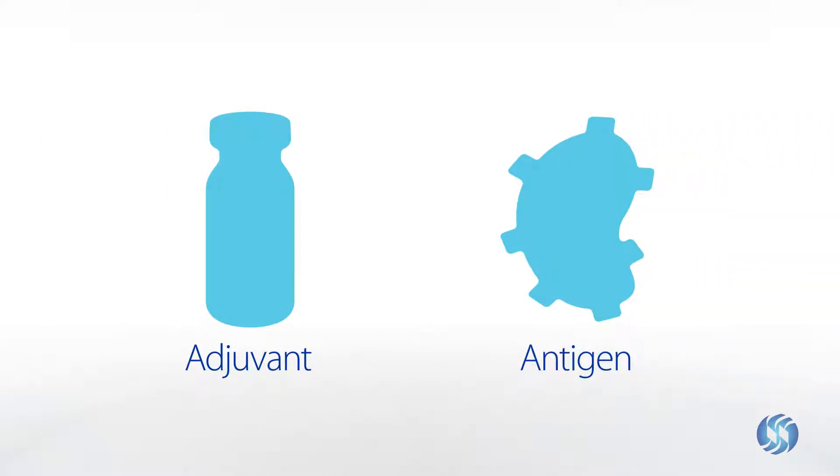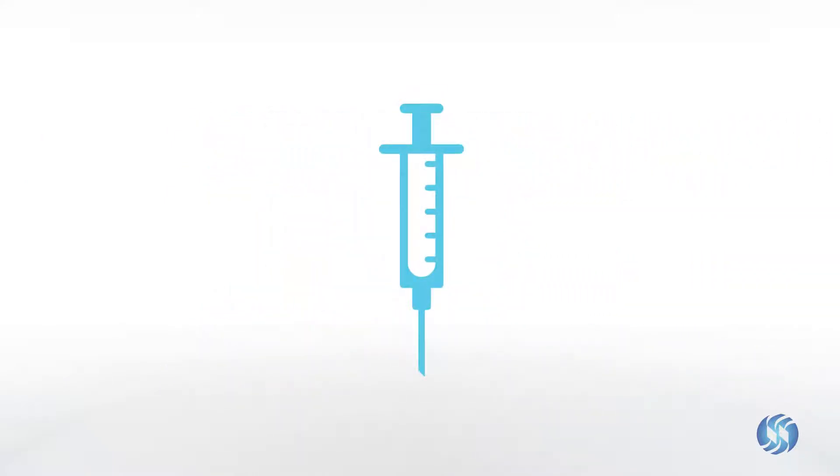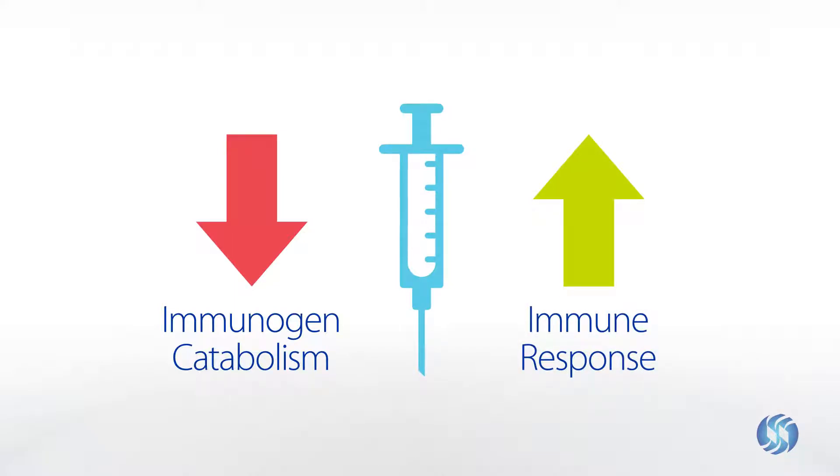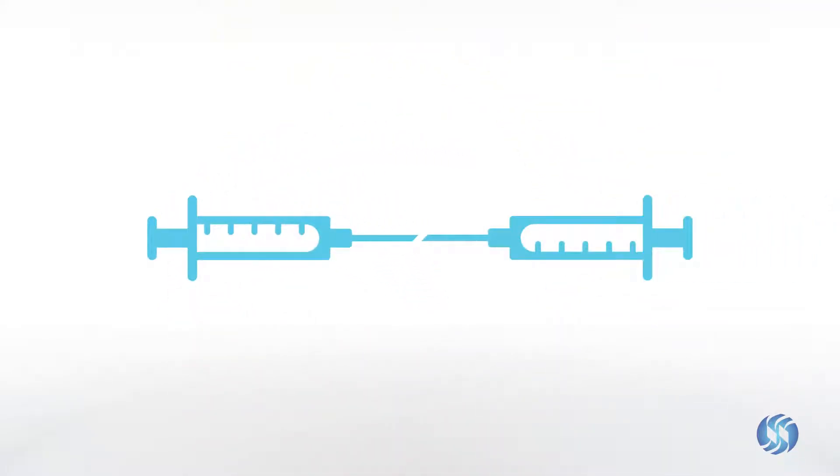Adjuvant and antigen mixtures are emulsified prior to injection to reduce immunogen catabolism and increase immune response. The traditional approach is to force the adjuvant-immunogen mixture through a double-hub needle between two syringes. The mixture is passed back and forth for up to 15 minutes to attain a thick emulsion.